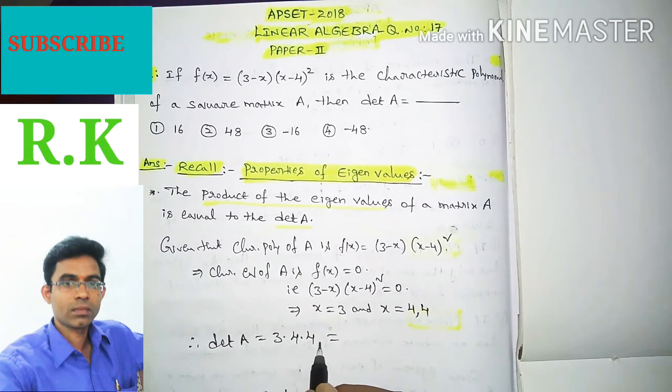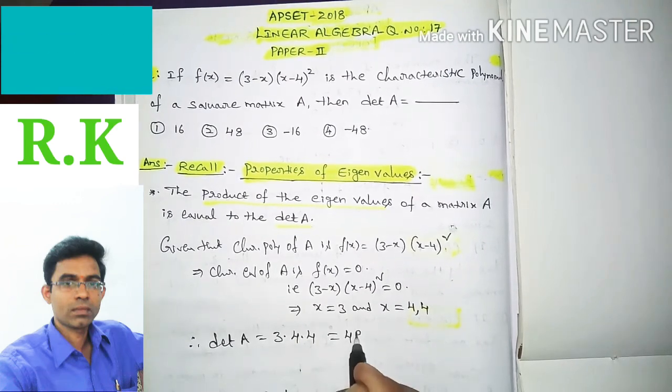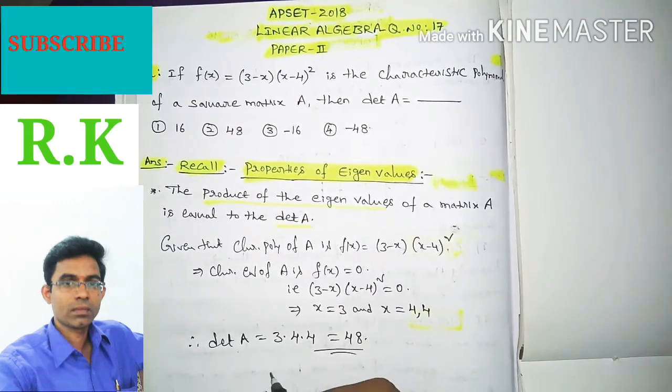Which is equal to 12 × 4, which gives 48. So that is the determinant of the given matrix capital A.